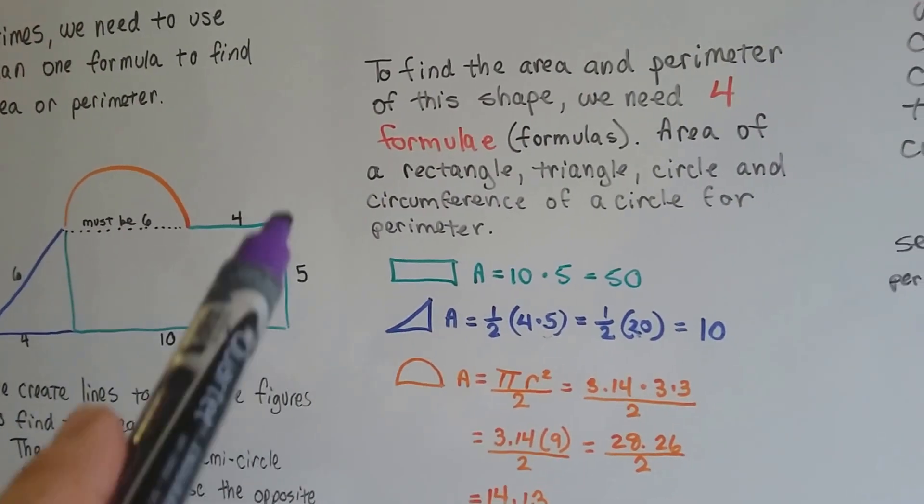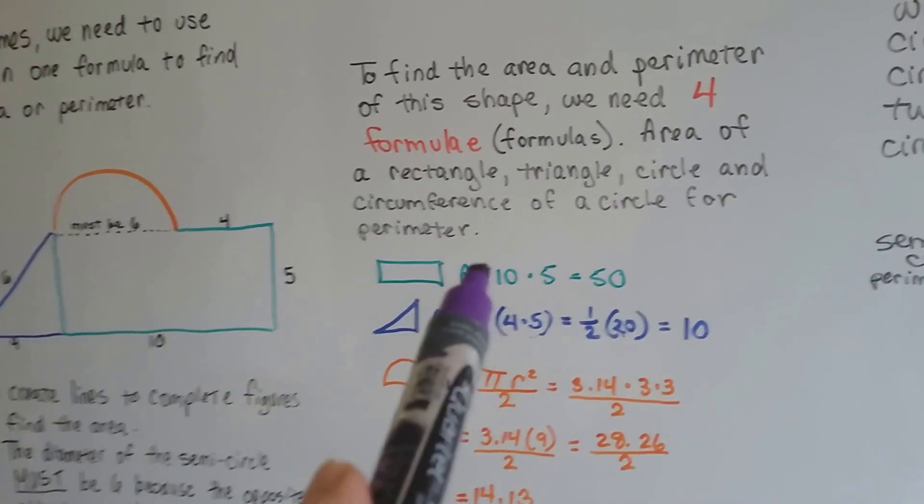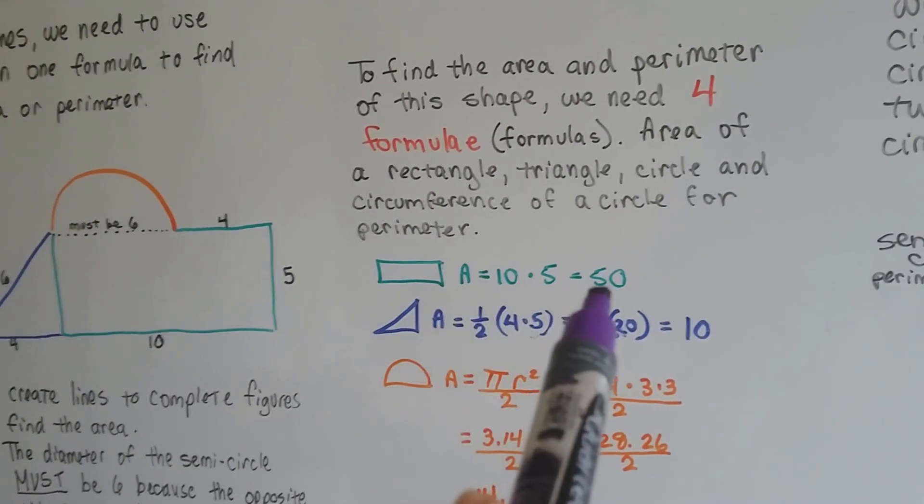We know this is 10 and this is 5. So the area of this rectangle is 10 times 5. It's length times width. It's 50.